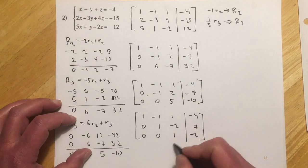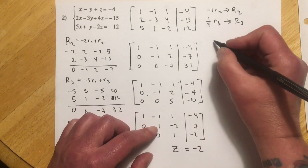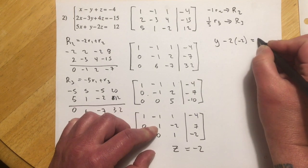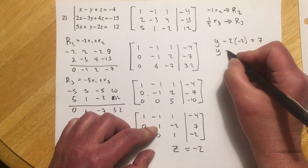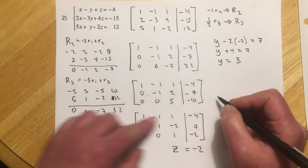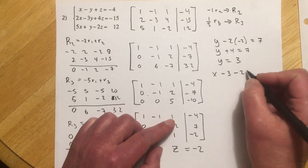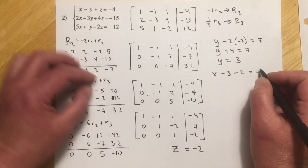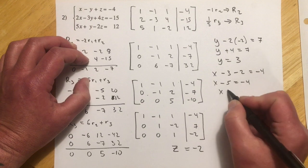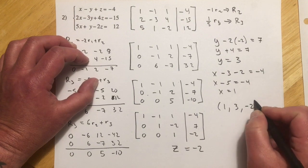And so now I know that z, 1z equals negative 2. Once I have that, I can back solve into the second equation. So that's y minus 2z, but z is now negative 2 equals positive 7. So y plus 4 equals 7, or y equals 3. And then plugging those into the first row, I have x, y would be minus 3, z would be minus 2, equals negative 4. And so that's x minus 5 equals negative 4. And adding that, x equals 1. So the solution is going to be 1, 3, and negative 2.